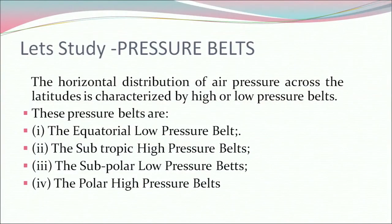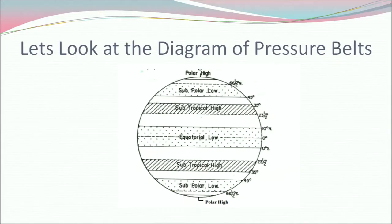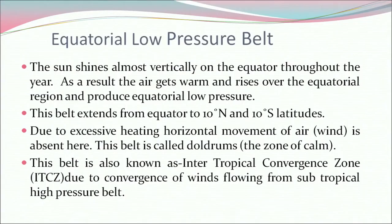Now let's study the pressure belts. Horizontal distribution of air pressure across the latitudes is characterized by high or low pressure belts. These pressure belts are: the equatorial low pressure belt, the subtropical high pressure belts, the subpolar low pressure belts, and the polar high pressure belts. Now let's discuss the equatorial low pressure belt. The sun shines almost vertically on the equator throughout the year. As a result, the air gets warm and rises over the equatorial region and produces equatorial low pressure. This belt extends from the equator to 10 degrees north and 10 degrees south latitude. Due to excessive heating, horizontal movement of air — wind — is absent here. This belt is called doldrums, the zone of calm. It is also known as the intertropical convergence zone (ITCZ) due to convergence of winds flowing from the subtropical high pressure belt.